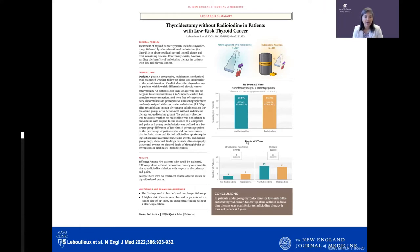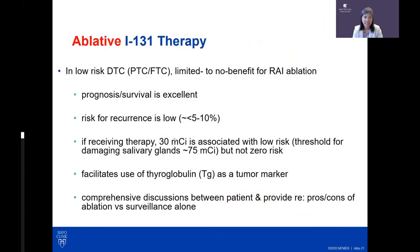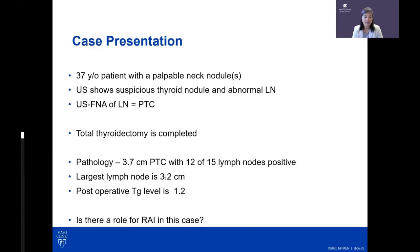Overall, data suggests that for low-risk patients, prognosis and survival is excellent, risk of cancer recurrence is low, 30 millicuries is a reasonable dose if treatment is used, and most patients may not benefit from an ablation dose. At Mayo Clinic, postoperative radioactive iodine is typically not recommended for low-risk patients because prognosis is excellent without it.